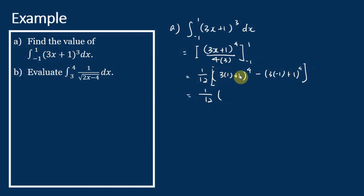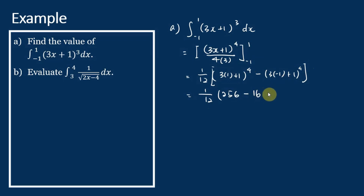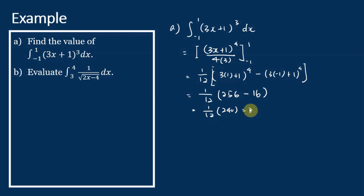4 to the power of 4 is equal to 256. Minus (negative 3 + 1), which is negative 2; negative 2 to the power of 4 is equal to 16. So this is equal to 1 over 12 times 240, which equals 20.